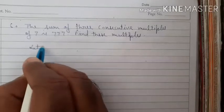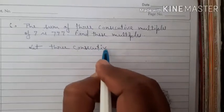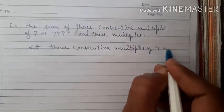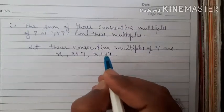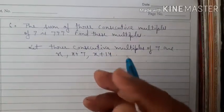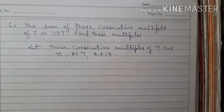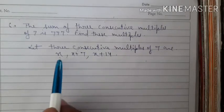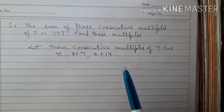To find multiples of 7, let 3 consecutive multiples of 7 be x, x plus 7, and x plus 14. Note that consecutive multiples of 7 differ by 7: from the first to the second the difference is 7, and from the second to the third is also 7, so the first and third differ by 14. Alternatively, you can take 7x, 7(x+1), and 7(x+2) — both approaches work.